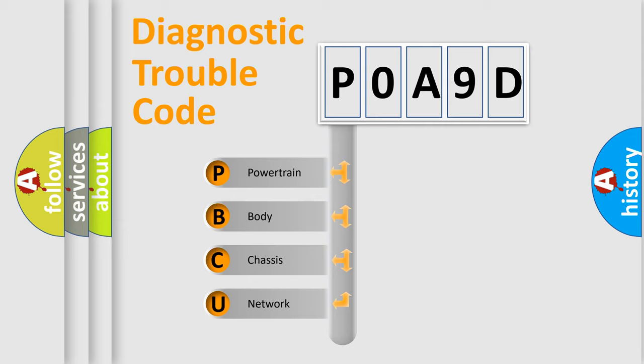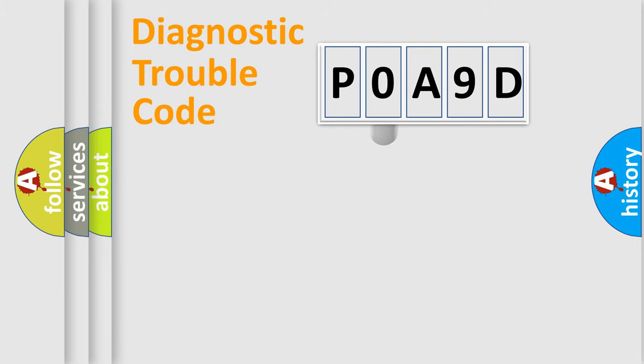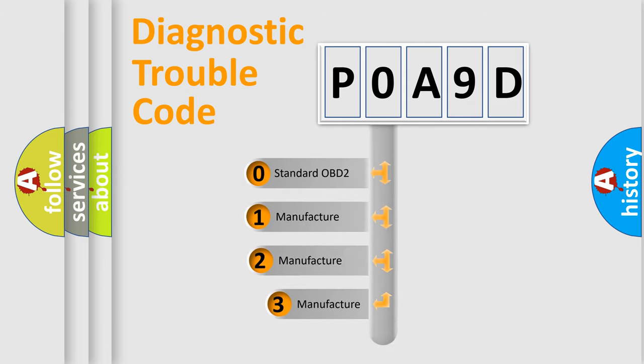We divide the electric system of the automobile into four basic units: powertrain, body, chassis, and network. This distribution is defined in the first character code. If the second character is expressed as zero, it is a standardized error.